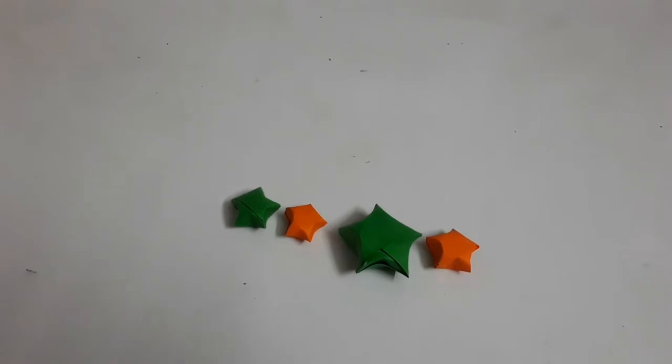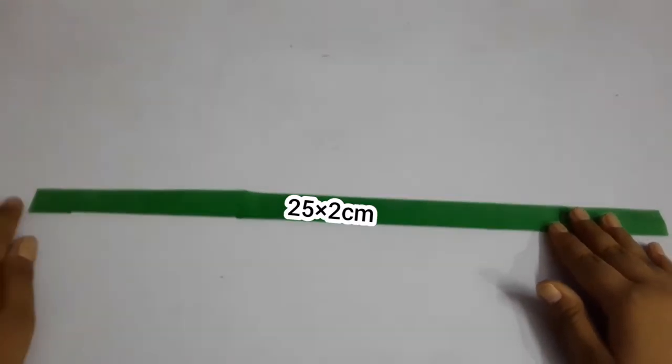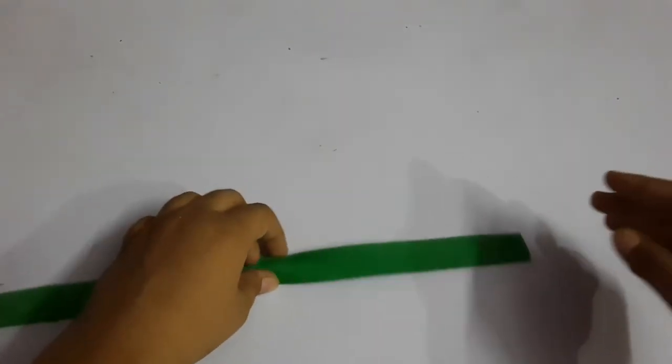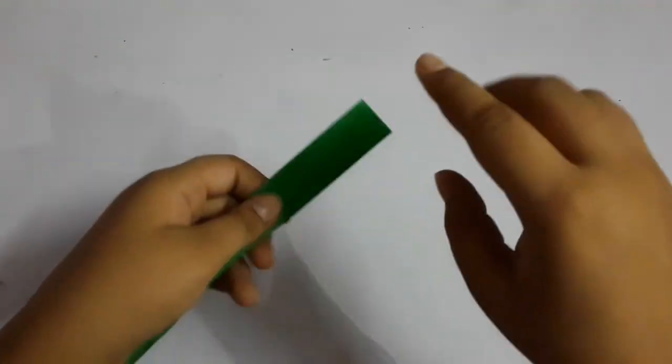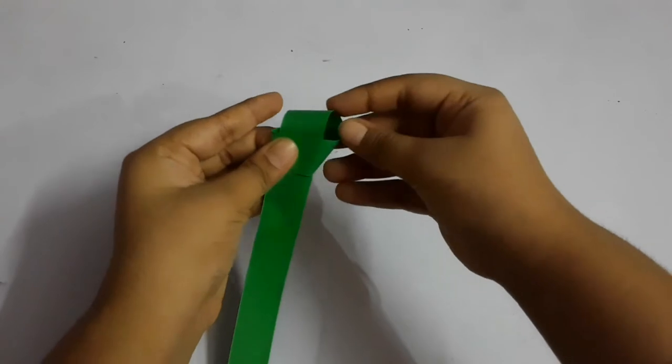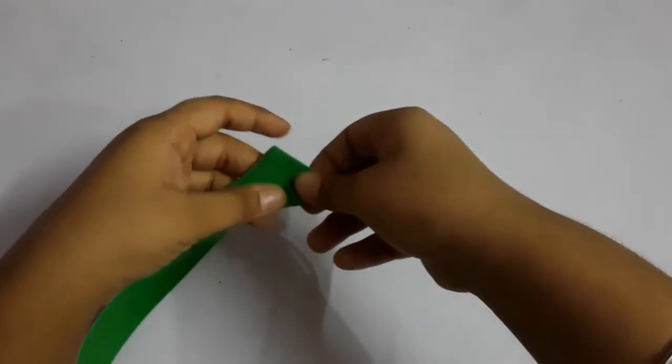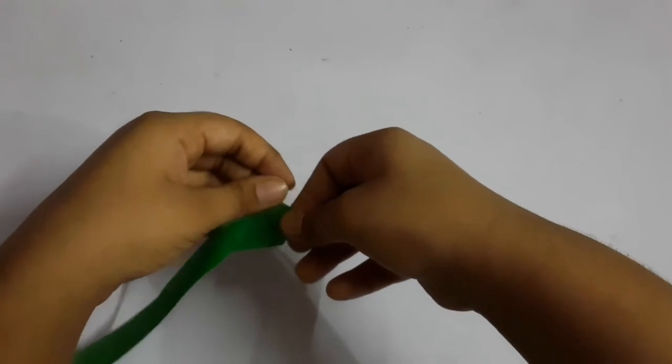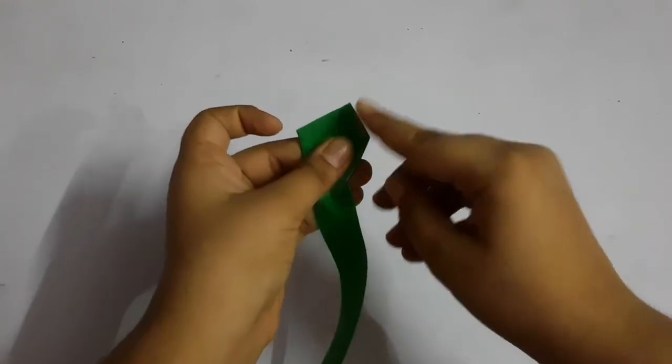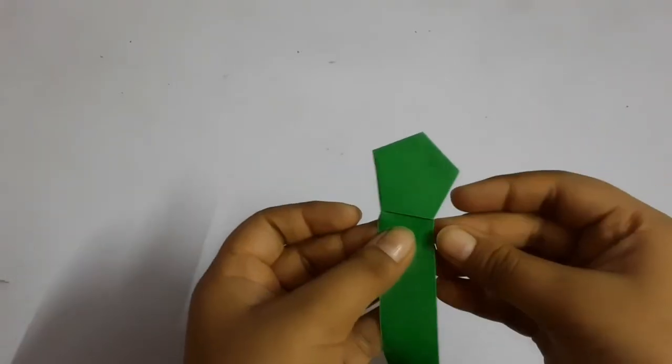So let's start. First we'll make a small star and for this we need a paper of breadth 2 centimeter and length 25 centimeter. We'll take one side of it and we will fold it like this, then we will take it out from here and then we will push this.